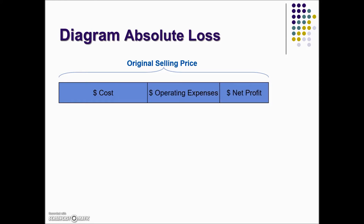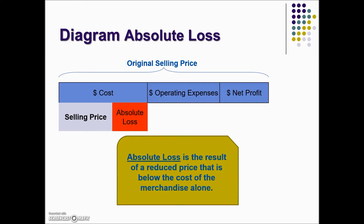The last kind of loss is called the absolute loss or gross loss. This occurs if the selling price is less than the actual cost paid for the item. For example, a firm that buys a pair of slacks for $38 and then sells the slacks for $25 has an absolute loss, which is the difference between the two: 38 minus 25, or $13.